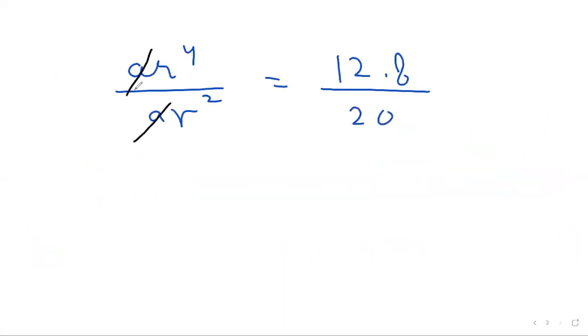A and A will be cancelled. R square and R square cancel. Now, the R value will be when 12.8 divided by 20, you will get 16 upon 25.